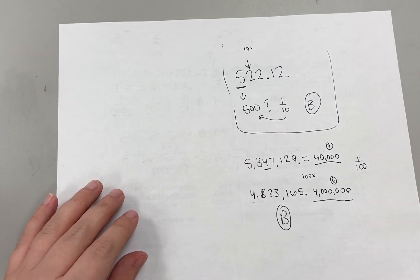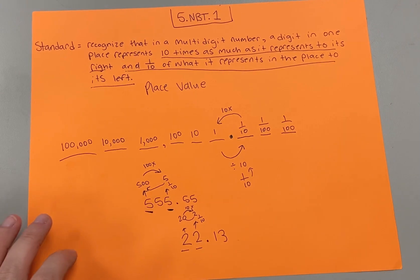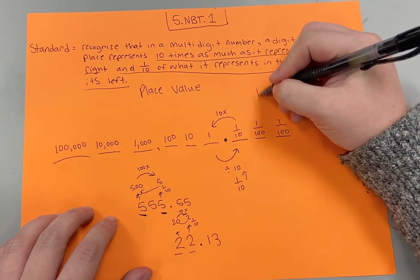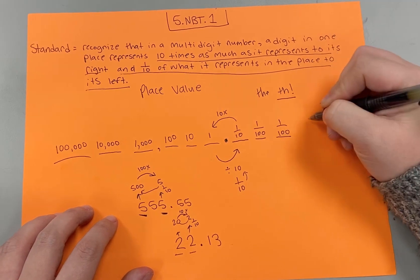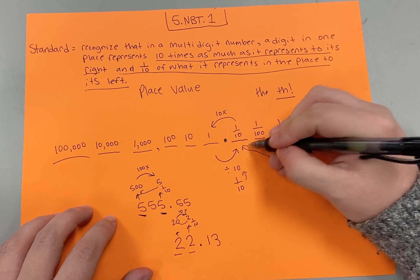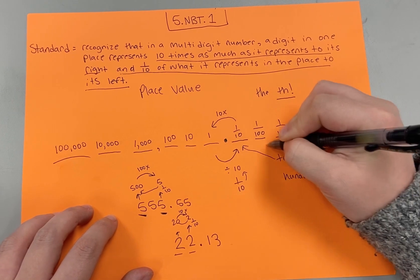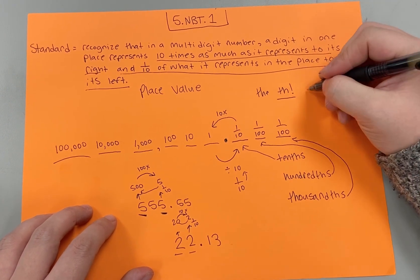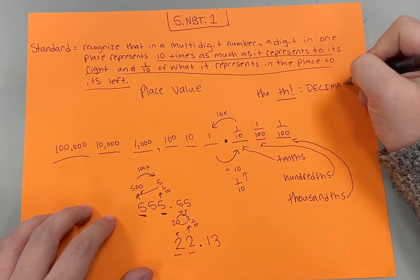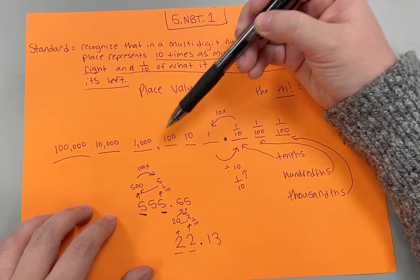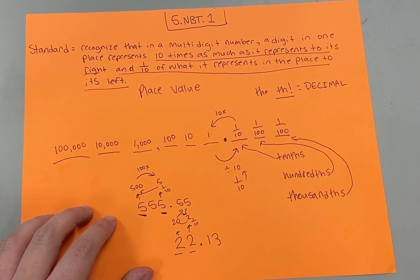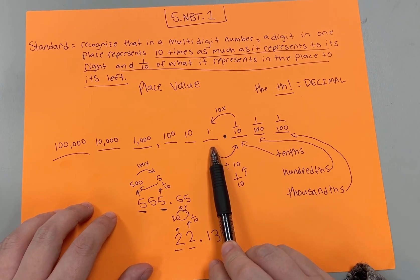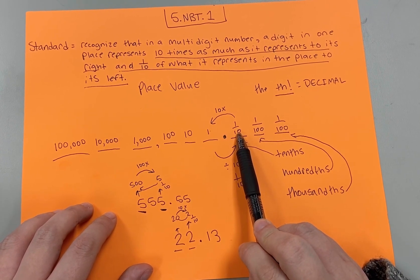That is pretty much exactly how to do the standard 5.NBT.1. We really need to know our place value. Decimal, tenths, hundredths, thousandths — and we need to remember the T-H ending means we're dealing with a decimal. Then continuing: decimal, ones, tens, hundreds, thousands, ten thousands, hundred thousands, and so on. A digit to the left is ten times bigger than a digit to its right, and the digit to the right is one-tenth of the digit to its left.